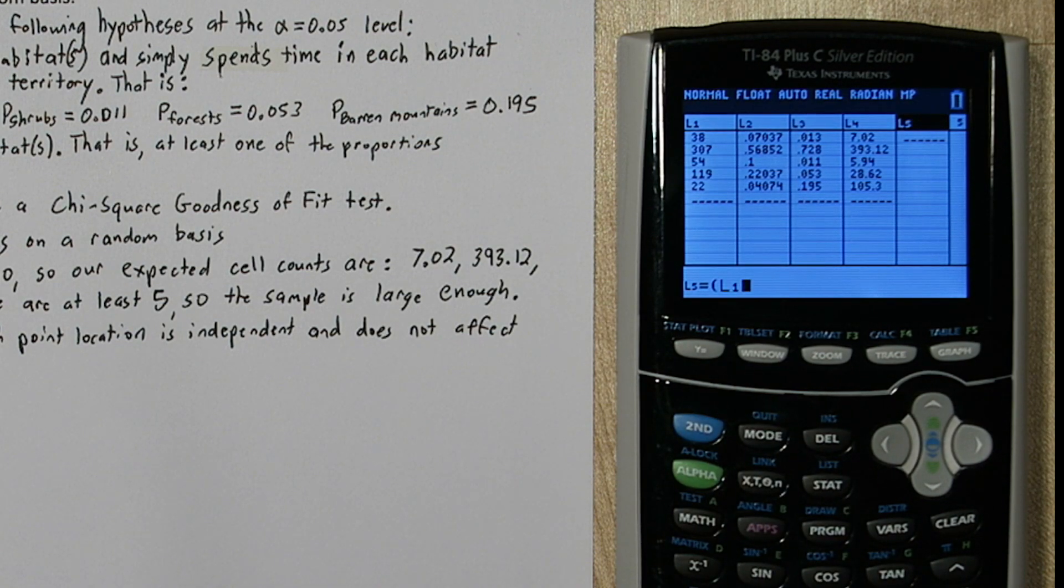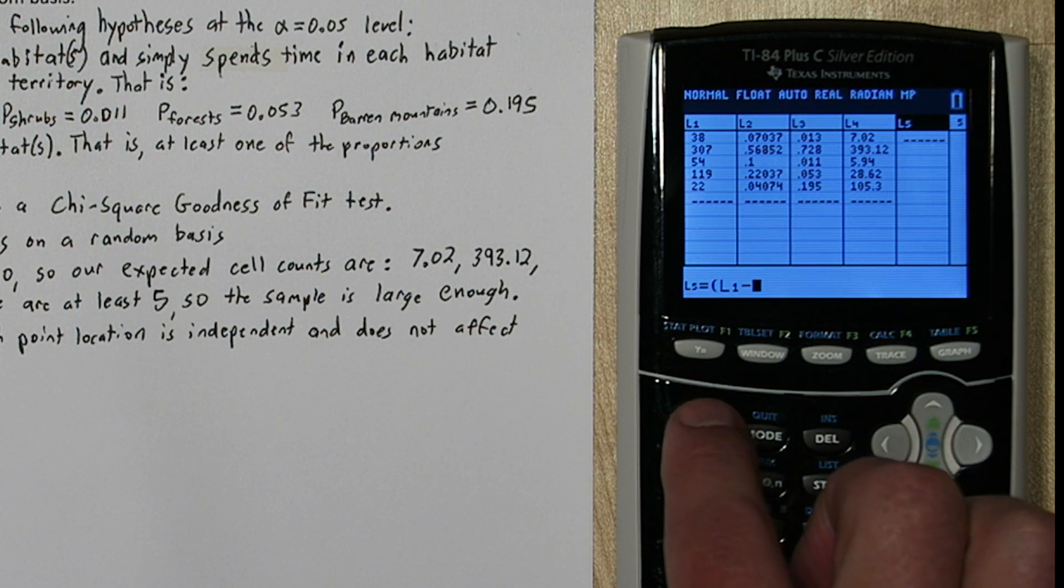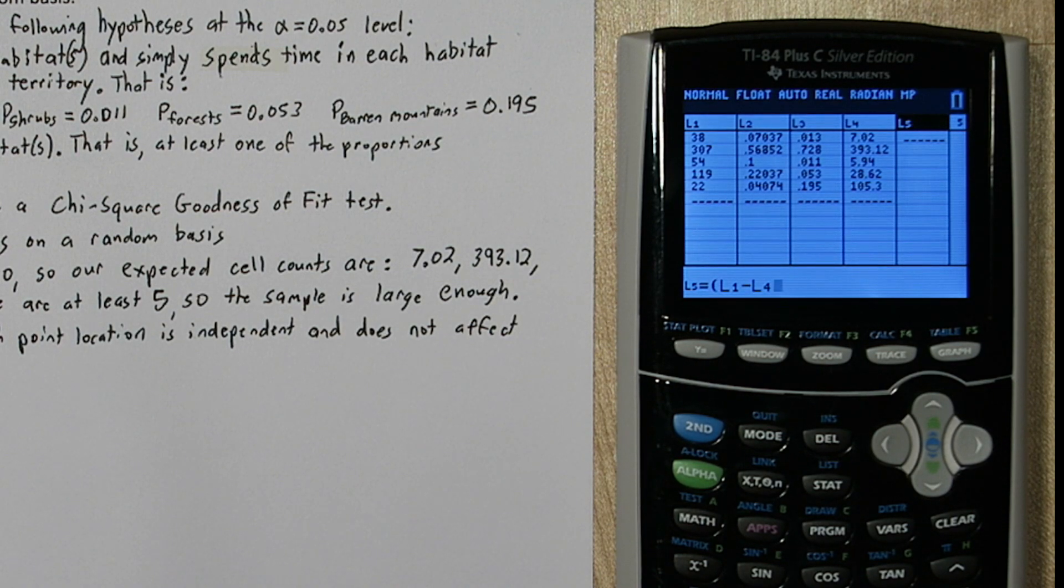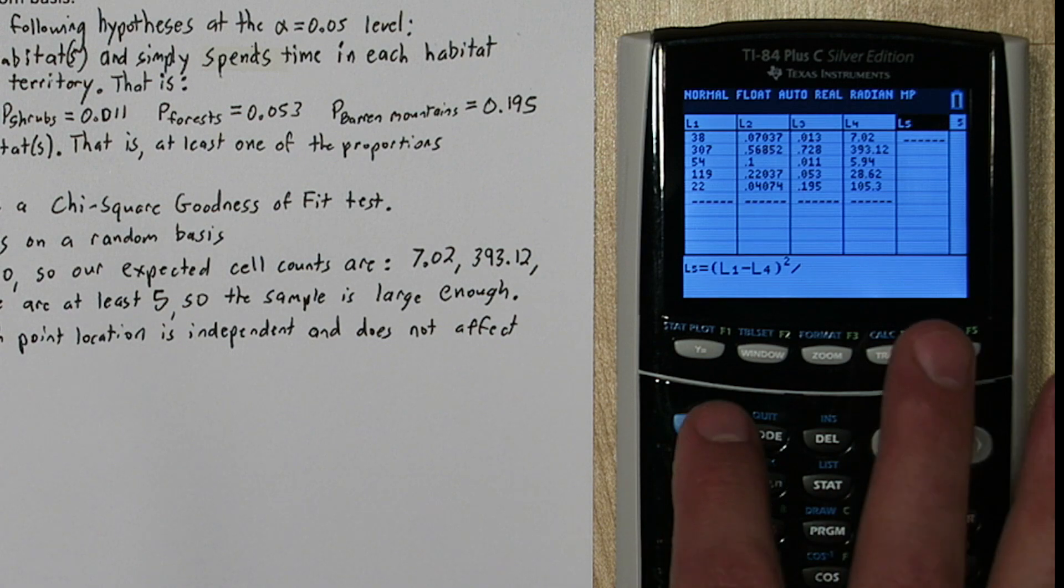so second one, minus expected, which is list four, and close parentheses and square it, and I'm going to divide that by list four.